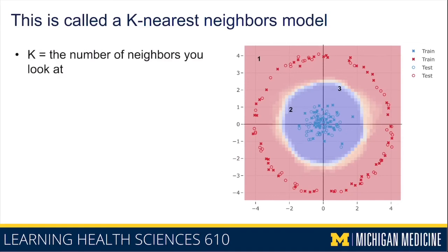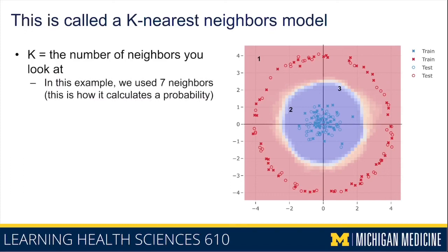The K refers to the number of neighbors you look at — you could look at the single closest neighbor, the closest 10 or 11, or the closest 40. In this example we looked at the nearest seven neighbors. Because we picked more than one neighbor, we can express areas of uncertainty: the yellow background represents areas where not all neighbors were the same color — maybe three-sevenths were blue and four-sevenths were red, or vice versa.